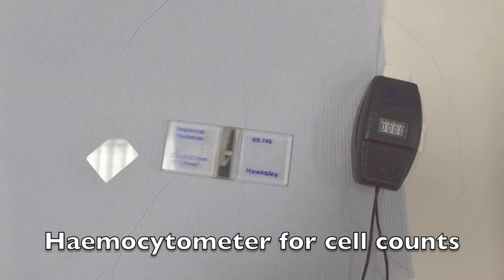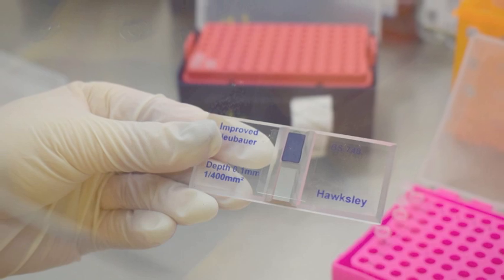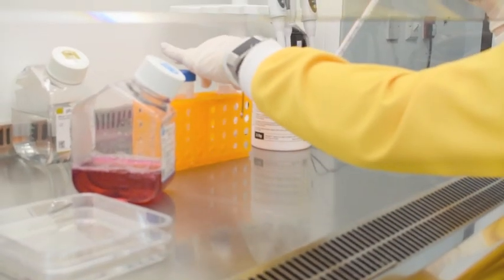Cells are then counted using a hemocytometer. Based on the cell count, the suspension is diluted to a density of 500,000 cells per ml.